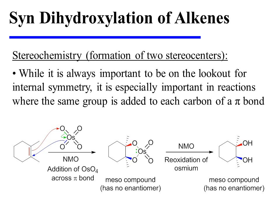It is always important to be on the lookout for internal symmetry, but it is especially important to do so in reactions where the same group is added to each carbon of a pi bond. In this instance, the alkene substrate is treated with osmium tetraoxide, and the cyclic osmate ester that forms has an internal plane of symmetry. It is therefore a meso compound and has no enantiomer. Furthermore, when NMO cleaves this cyclic osmate ester, the syn-vicinal diol is also a meso compound because of its internal plane of symmetry, and therefore it has no enantiomer. So in this instance, there is only a single reaction product.